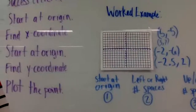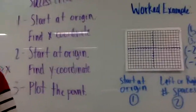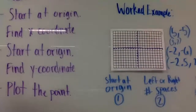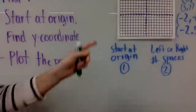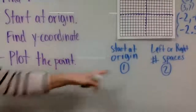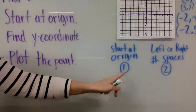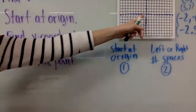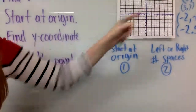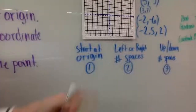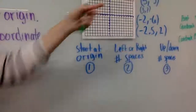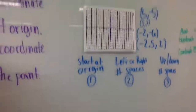Here's a worked example. What we're going to be doing is starting at the origin, going left or right however many spaces based on the x coordinate, and then going up or down however many spaces based on the y coordinate.